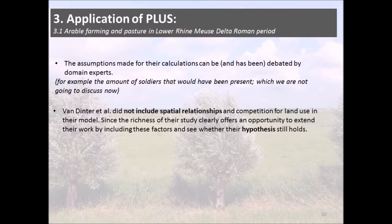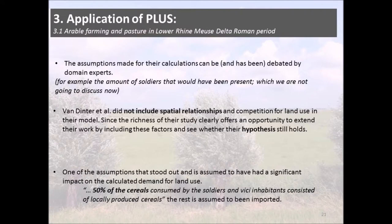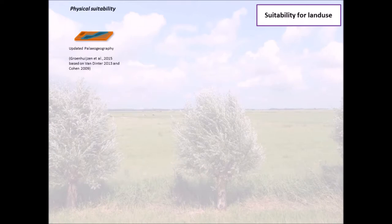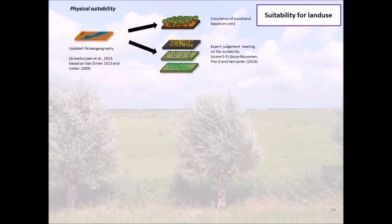One of the assumptions that stood out and has a significant impact on the calculated demand for land use is that 50% of the cereals consumed by Roman soldiers and vici inhabitants consisted of locally produced cereal, with the rest assumed to be imported. Since this figure has a huge impact, we configured our model to vary this figure in steps of 10%. To determine the suitability for land use we identified several components, the first being physical suitability. We looked at the paleogeography and simulated woodland based on yield, with physical suitability scores assigned by expert adjustment.